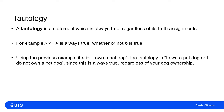If I use the example that P is the statement 'I own a pet dog', then the tautology would be 'I own a pet dog or I do not own a pet dog.' It doesn't matter whether you own a dog or not — you definitely do own a dog or you don't own a dog. So the statement 'I own a pet dog or I don't own a pet dog' is tautological, because it is always true.